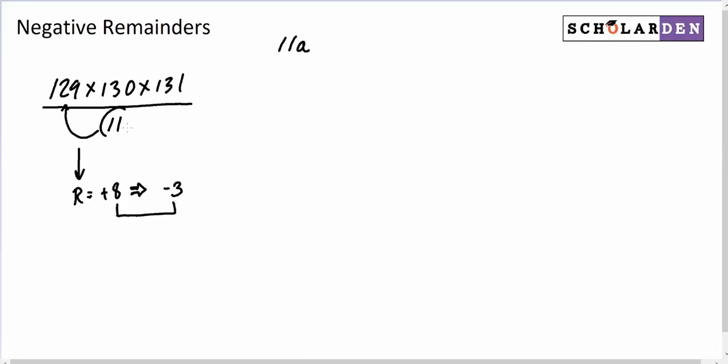So we can say that we have a negative remainder of 3. So what I'm doing is I'm rewriting 129 now as 11 times some number minus 3. Okay, so that's 129.